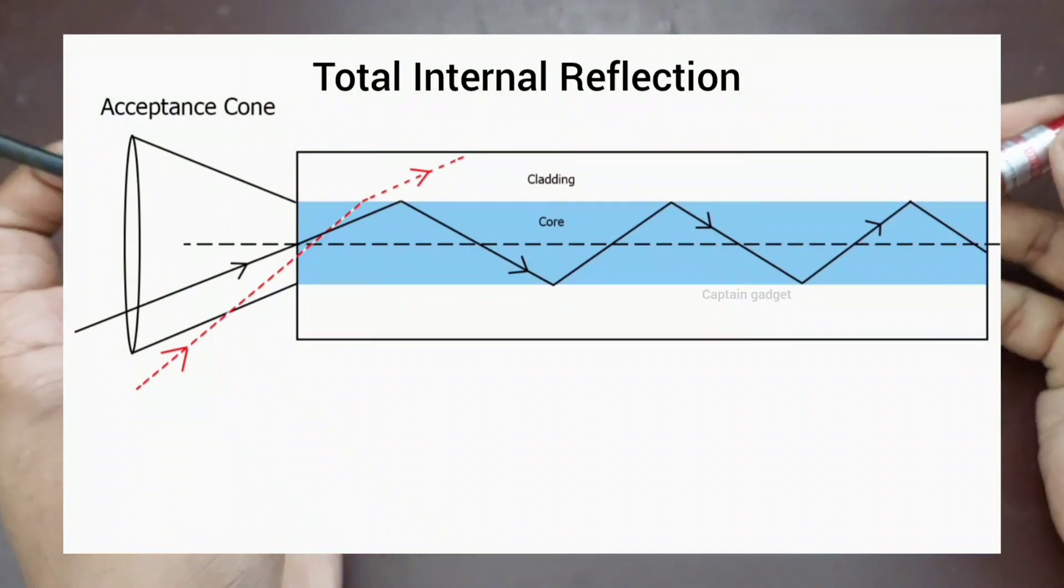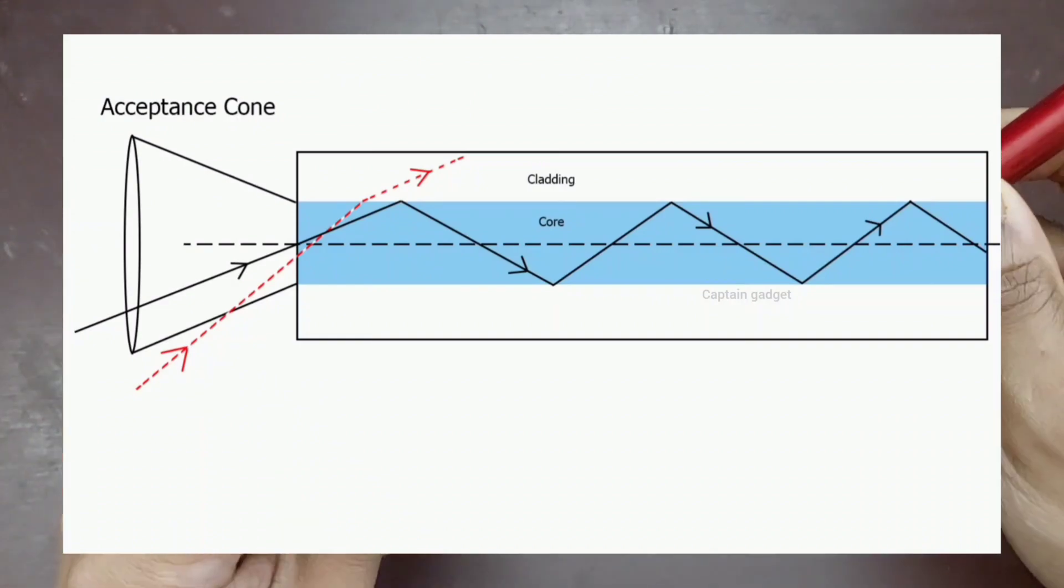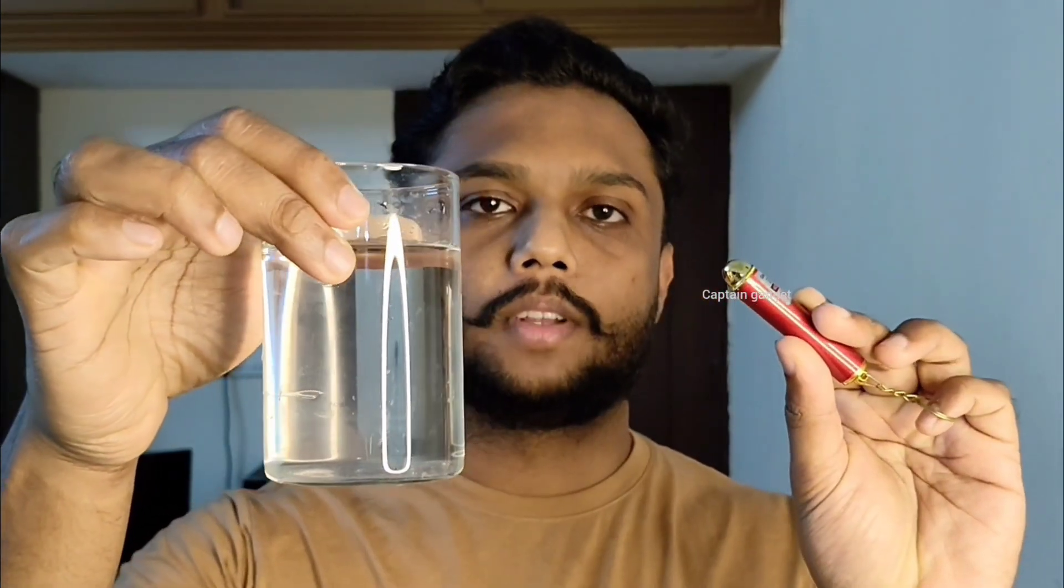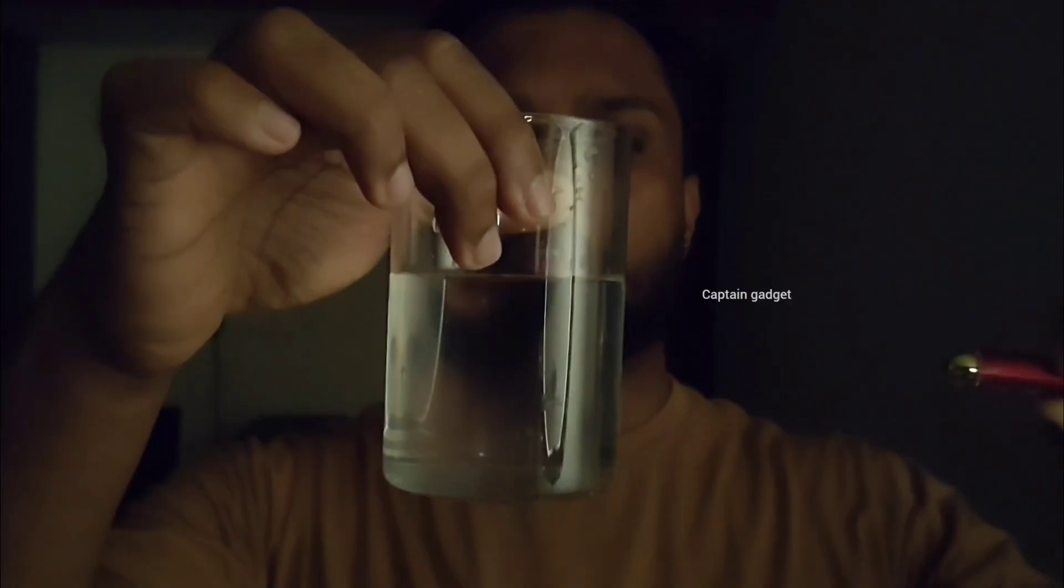This is how the light travels through the fiber. I will show you total internal reflection with this glass of water. I've added some salt into it. It's a small laser. Let's see—you can see the laser is passing through the water.